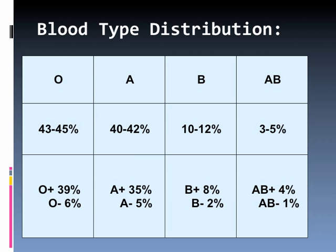If you look at the bottom of the chart, O is divided into O positive and O negative — 39% of the population are O positive, and 6% are O negative. The same pattern holds for A: A positive is more common than A negative; B positive is more common than B negative; and AB positive at 4% is more common than AB negative. Only 1% of the population is AB negative, so it's very rare.